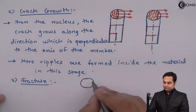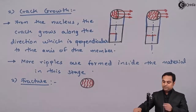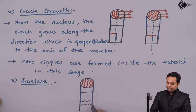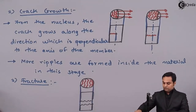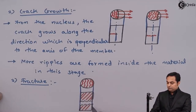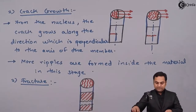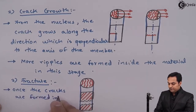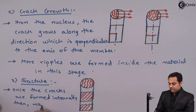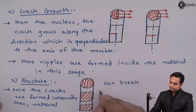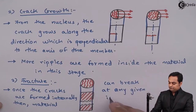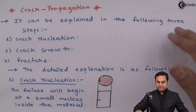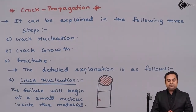Next there is fracture, the last stage. When fracture occurs, cracks are developed throughout the material and the material will break into two halves. Once the cracks are formed internally, the material can break at any given instant, and that breaking of the material is called fracture. In this video we have seen crack propagation, the three steps involved, along with the explanation of each term.